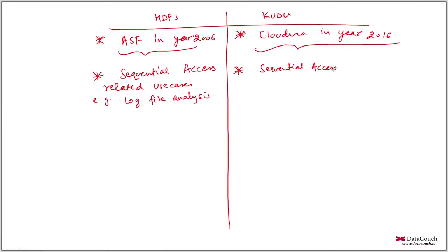But Kudu can be used for sequential access use cases as well as random read and random write kind of use cases. So Kudu supports both, and that's another important distinction.